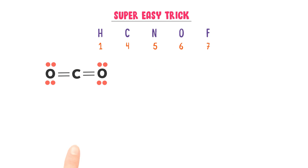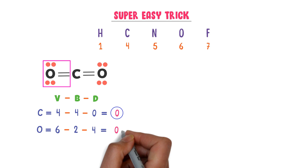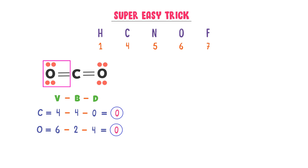Now consider this molecule of carbon dioxide. Let me calculate the formal charge on the carbon atom using the trick V-B-D. The valency of carbon is 4, minus this carbon atom forms four bonds in this molecule, minus there is no dot present on this carbon atom — so I get zero. The formal charge on this carbon atom is zero. For this oxygen atom: valency is 6, minus it forms two bonds with carbon, minus there are four dots present — so I get zero. The formal charge on this oxygen atom is zero.